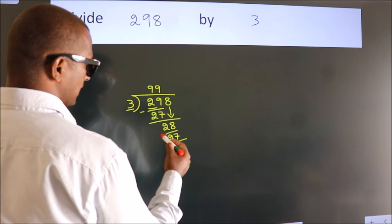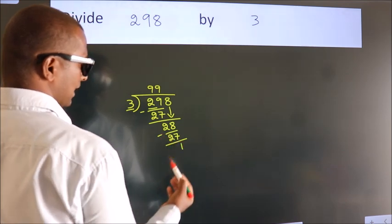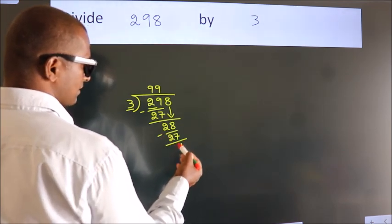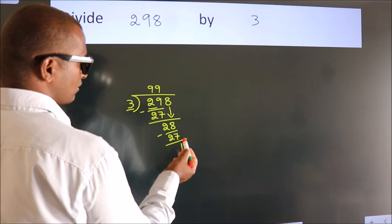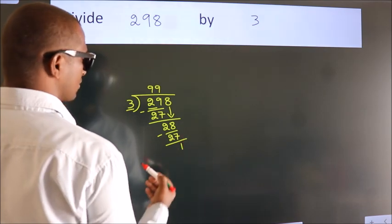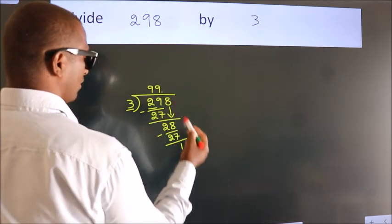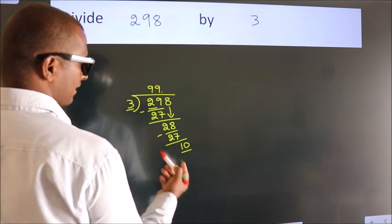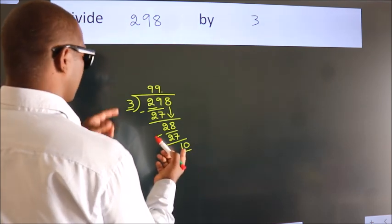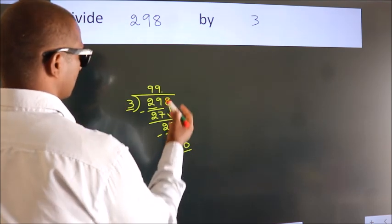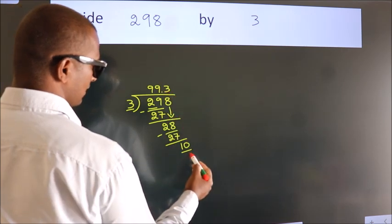Now we subtract. We get 1. After this, no more numbers to bring down. So what we do is, we put a dot and take 0. So, 10. A number close to 10 in the 3 table is 3 threes, 9.